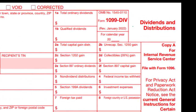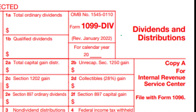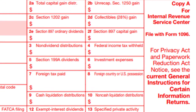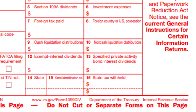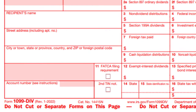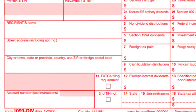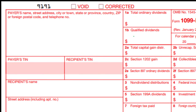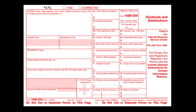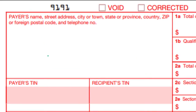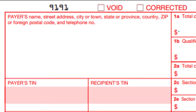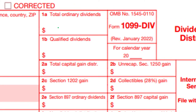Here we are in our 1099-DIV. This is what you'll typically get from your financial institution to help you report your dividends. Note that it might not look exactly like this in format and might not have all the boxes, but it will typically have the numbers so you can look them up in the instructions. You've got the payer's name and address, the payer's TIN, the recipient's TIN, and so on, and then boxes 1A and 1B.